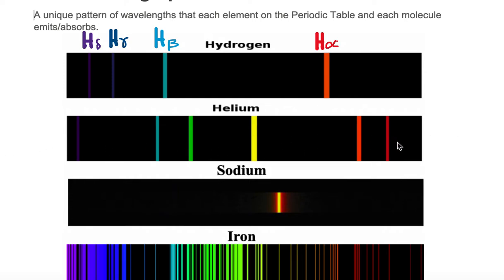It'll always be red, orange, yellow, green, blue, indigo, violet, but some of the elements on the periodic table won't have all the colors. For example, sodium.